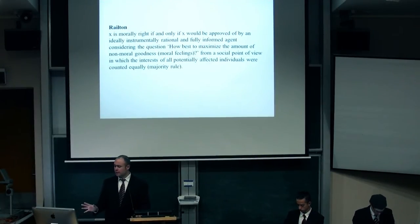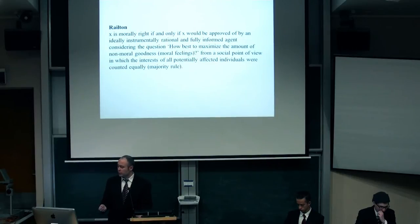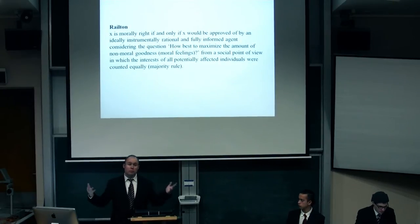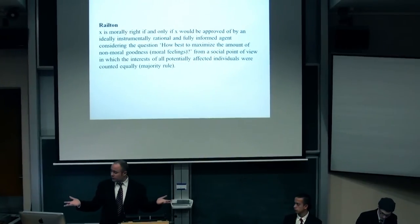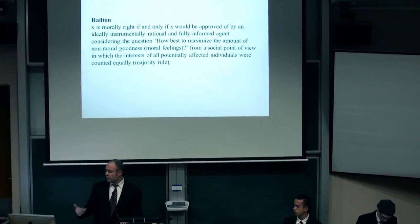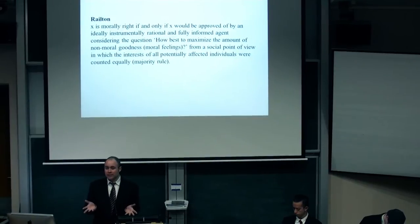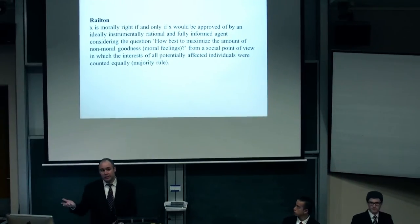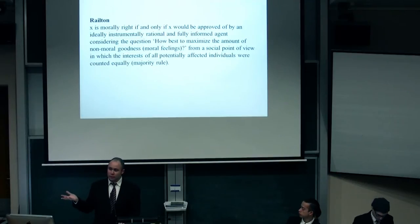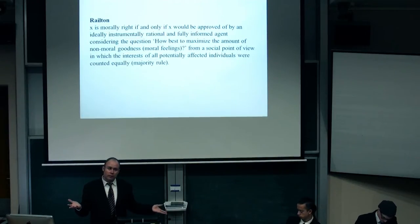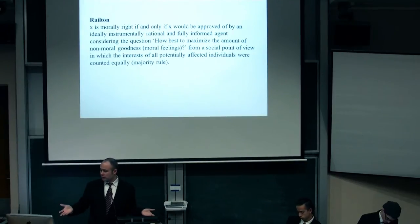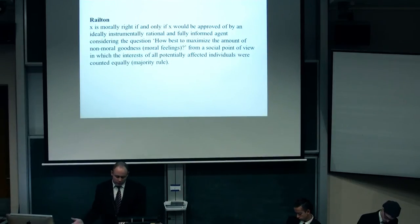As I understand it, Railton defines: X is morally right if and only if X would be approved by an ideally instrumentally rational, fully informed agent considering how best to maximise the amount of non-moral good — people's moral feelings. We're going to maximise as many people's moral feelings as possible from a social point of view in which the interests of all potentially affected individuals are counted equally. Maybe I'm missing something, but I don't see how this is different from majority rule. If there are 10,000 people in Nazi Germany whose moral feeling is that the Jews should be exterminated, and 1,000 Jews whose moral feeling is that they should not be, and we're maximising the interests of potentially affected individuals — you have 10,000 here and 1,000 here — it feels like majority rule, which I don't think is a good basis for ethics.